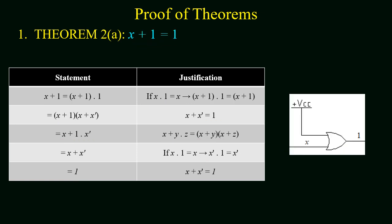The next theorem states x + 1 = 1. In hardware realization, an OR gate with one input connected to VCC (logic 1) always outputs 1. For the postulate-based proof, we take (x + 1) · 1, replace 1 with (x + x'), and apply distributive law to get x + 1 · x'. Since x' · 1 = x', we have x + x', and x + x' is always equal to 1.